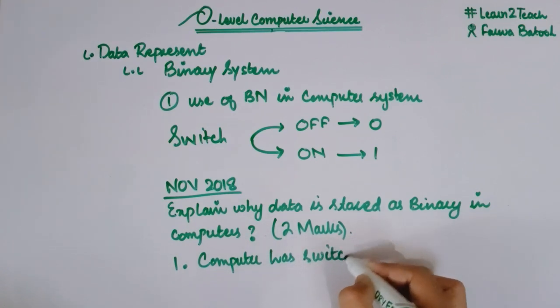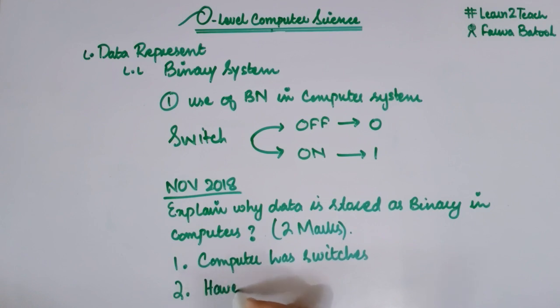Computer has switches—it's a collection of switches. The second thing you need to write is switches have only two states. What are these two states? Off or on, or we can say in binary as zero or one.